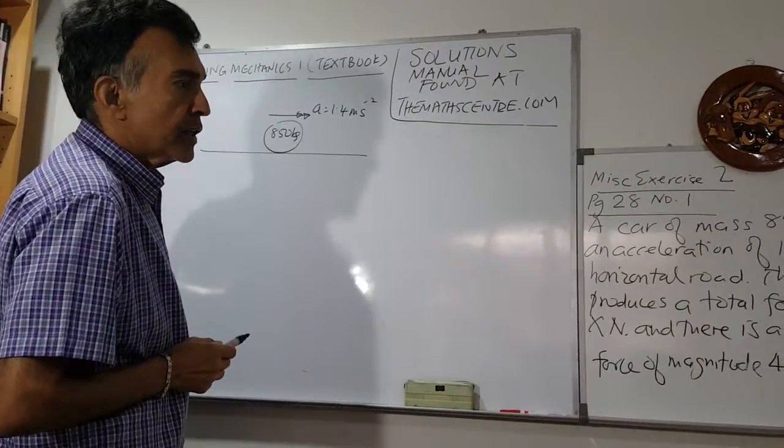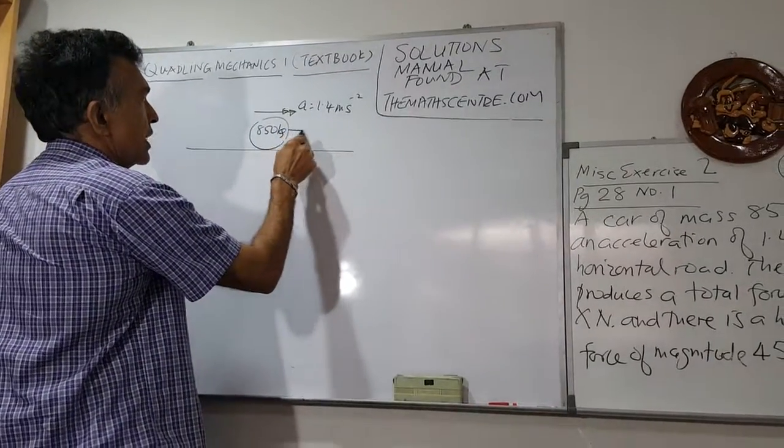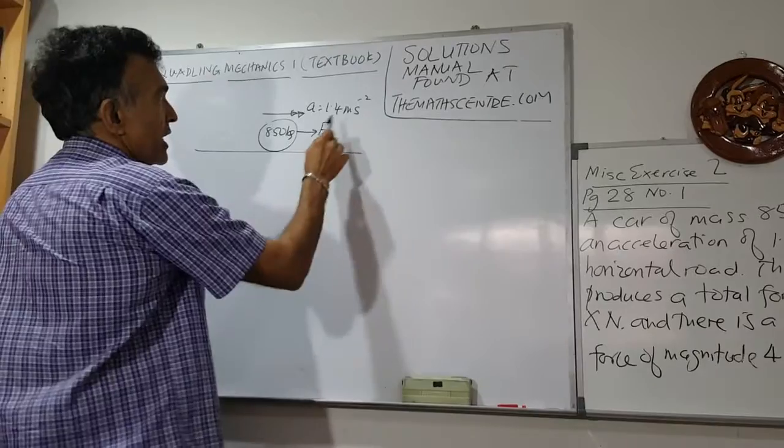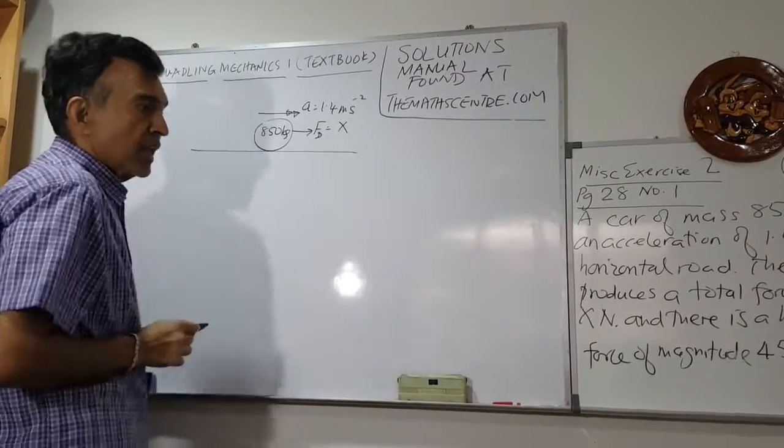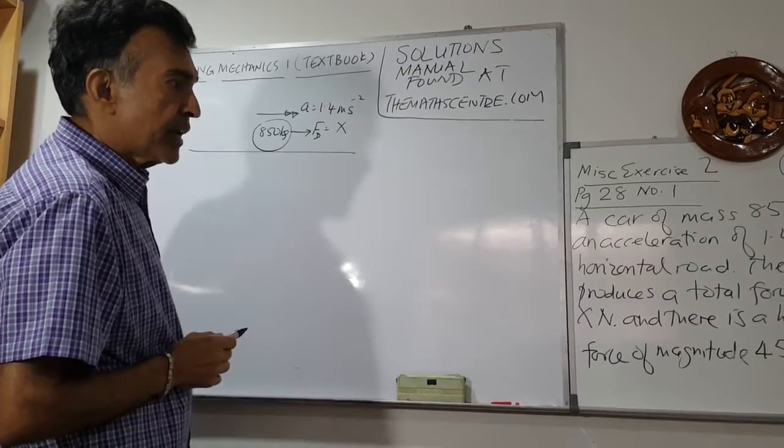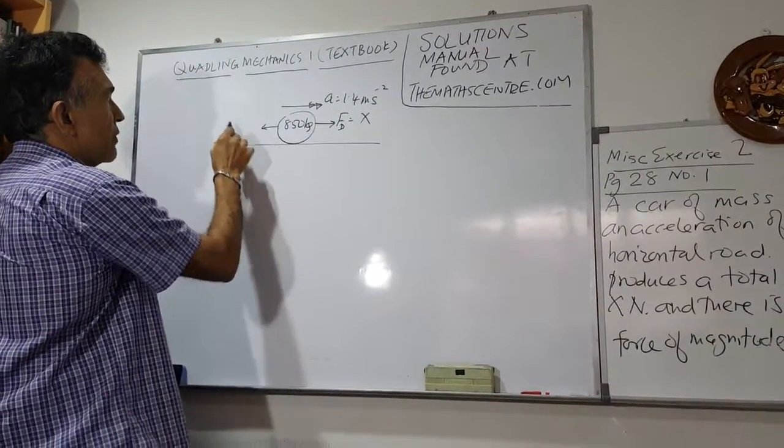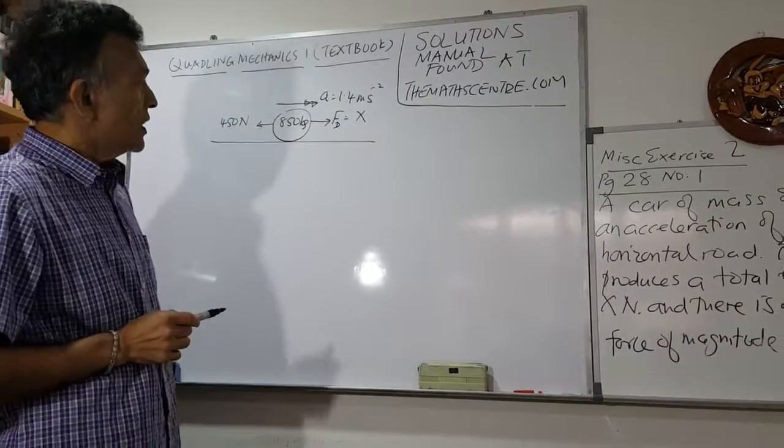The forward force, I'll indicate that as F_D, where F_D is the driving force of X. And there is a resisting force of 450. So the resisting force is 450. Okay, looks good.